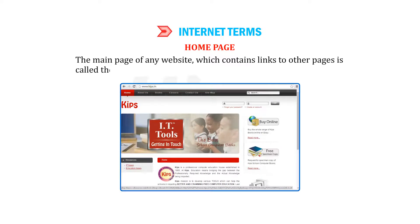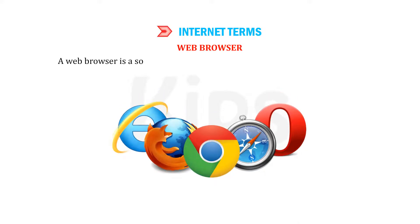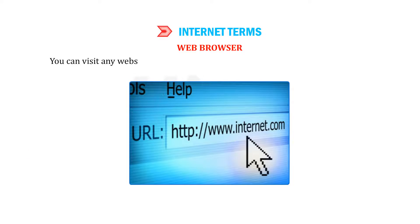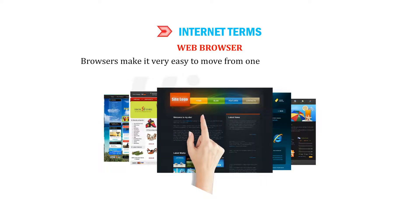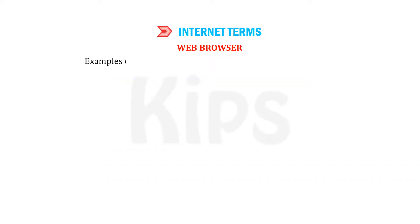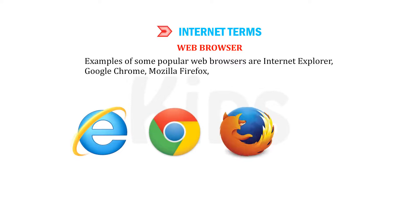Home page: The main page of any website which contains links to other pages is called the home page. By default, it is the first page of every website. Web browser: A web browser is a software application or program that allows you to access all the information available on the web. You can visit any website by entering its URL in the address bar of a web browser. Browsers make it very easy to move from one website to another. You can normally open your web browser from a shortcut on your desktop. Examples of popular web browsers are Internet Explorer, Google Chrome, Mozilla Firefox, and Opera.